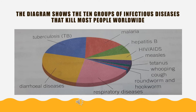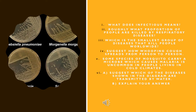In this slide you can view a graphic chart showing the 10 groups of infectious diseases that kill the most people worldwide. The first question is: What does infectious mean? Infectious diseases are spread by infectious agents like bacteria, viruses, and fungi.